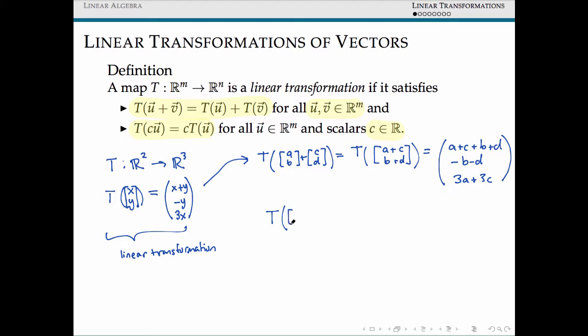In the other direction, if I looked at my sum of my image of these two vectors separately, so these two are the sum of my first and my second coordinate, so this is a plus b, negative of my second coordinate is negative b, and three times my first coordinate is 3a. Plus the sum of my first and my second, negative of my second coordinate, and three times my first. Taking that sum after applying my transformation gives me a plus b plus c plus d, negative b minus d, and 3a plus 3c.